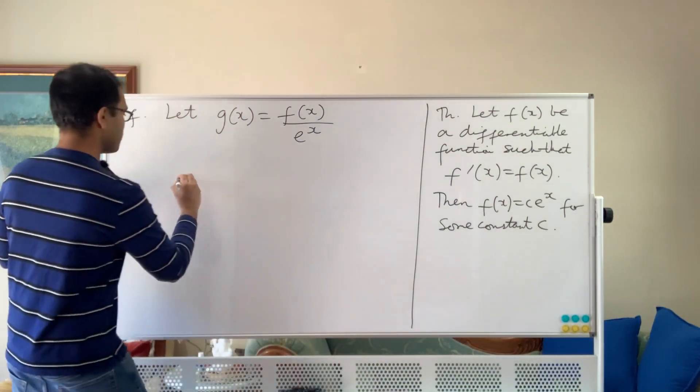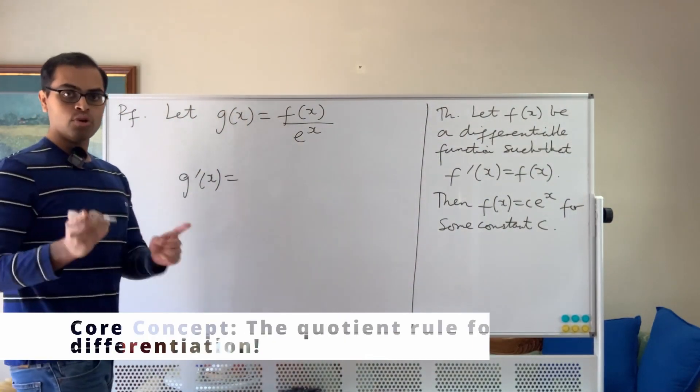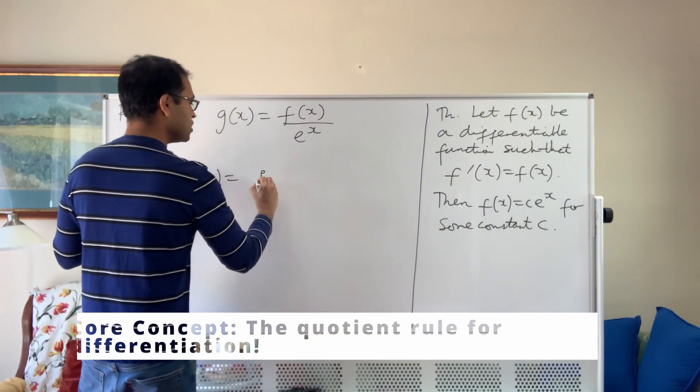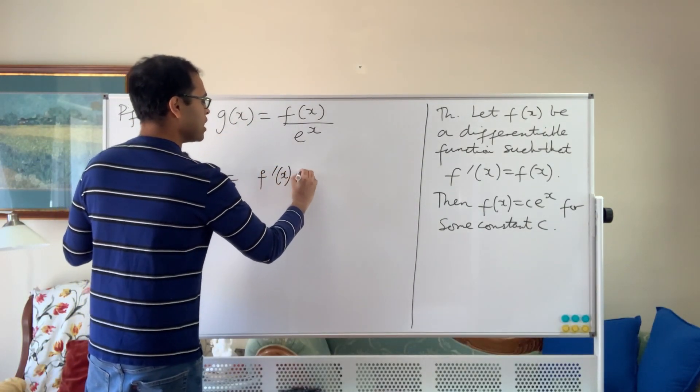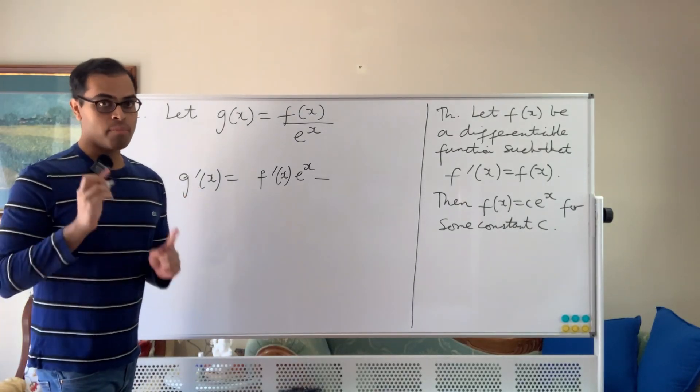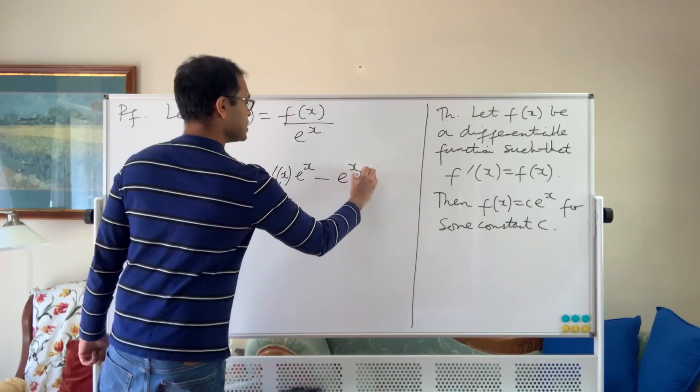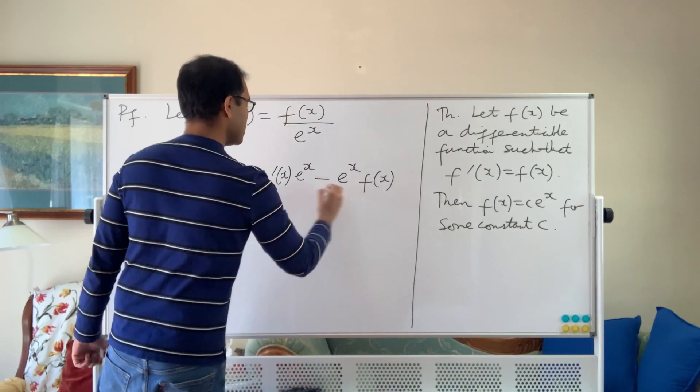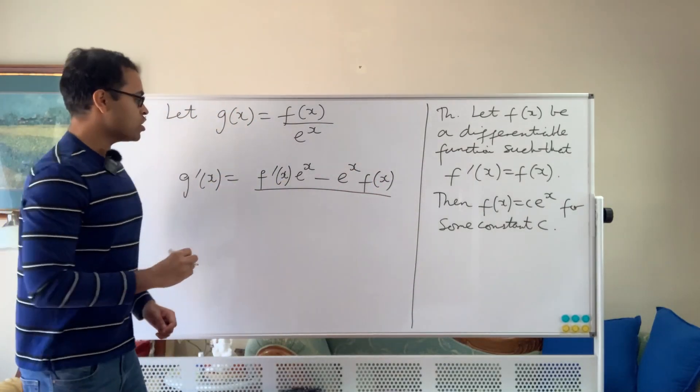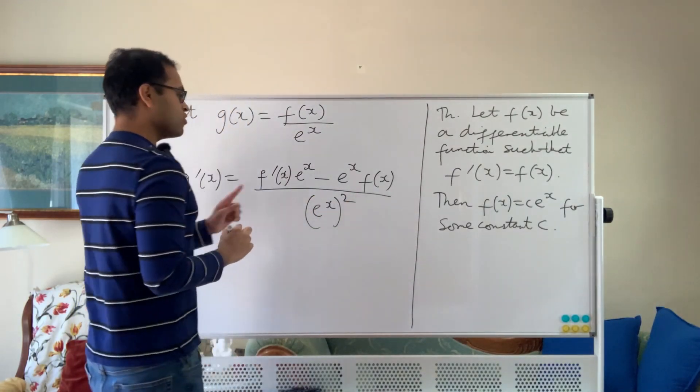What is the derivative of g of x? So g prime of x uses the quotient rule, right? The quotient rule for differentiation tells us that you differentiate the top, f prime of x, multiply by the bottom, then differentiate the bottom and multiply by the top. But we know that e to the x is its own derivative. So we get e to the x times the top, which is f of x, divided by the square of the denominator, which is going to be e to the x squared. Now this is not going to matter so much. We've got that.